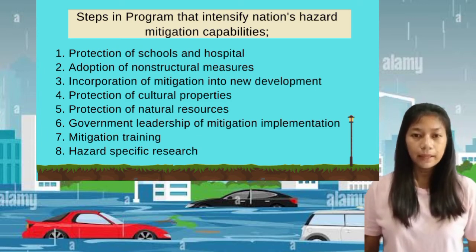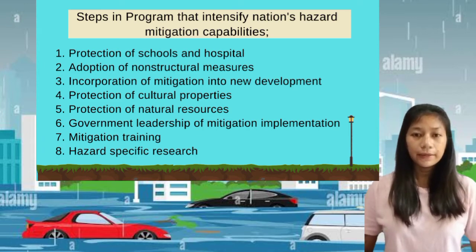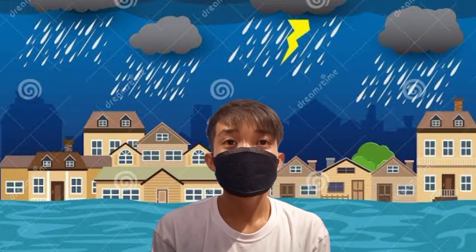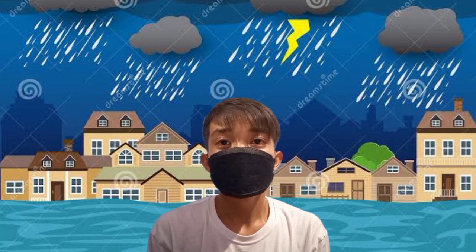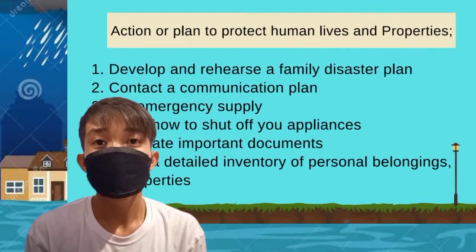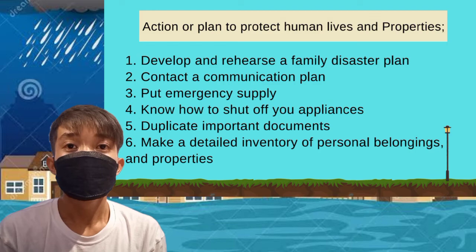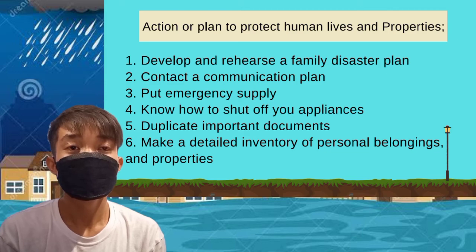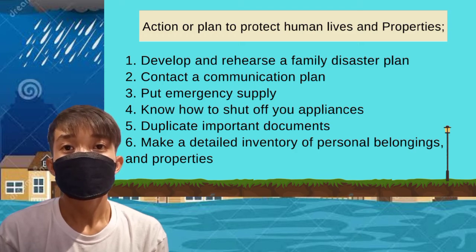Those are the eight steps that intensify hazard mitigation capabilities. Now, action or plans to protect human lives and properties. Number one, develop and rehearse a family disaster plan. A disaster plan is a must because we can use it when an emergency happens — it consists of actions to take in case of an emergency, for example, getting the first aid kit then using the backdoor to go outside.